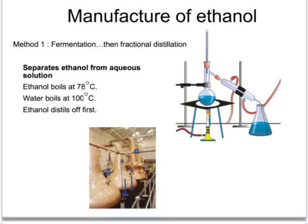Distillation, or fractional distillation in this case, works because we have a mixture of ethanol which boils at 78 degrees and water which boils at 100 degrees. Therefore, when we heat up the mixture, the ethanol boils at the lower temperature first and it distills off and separates therefore from the water.